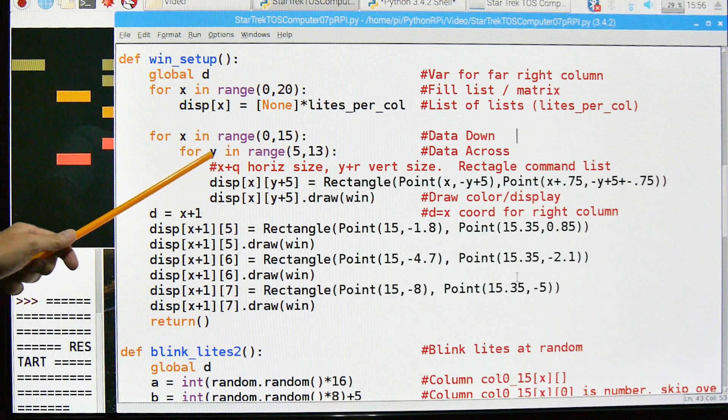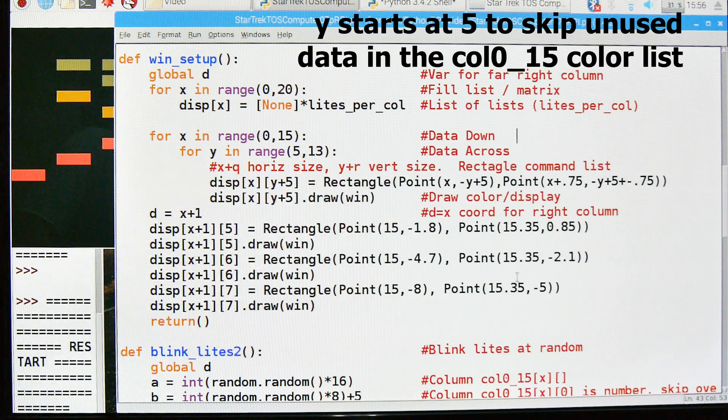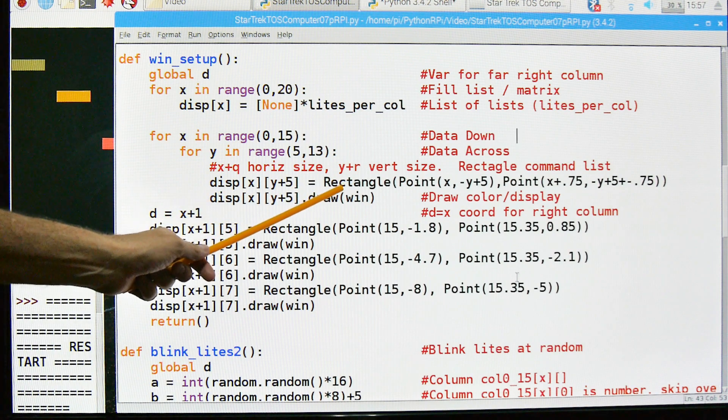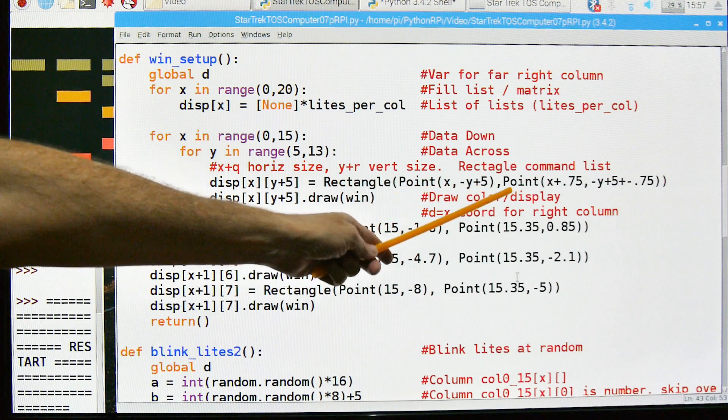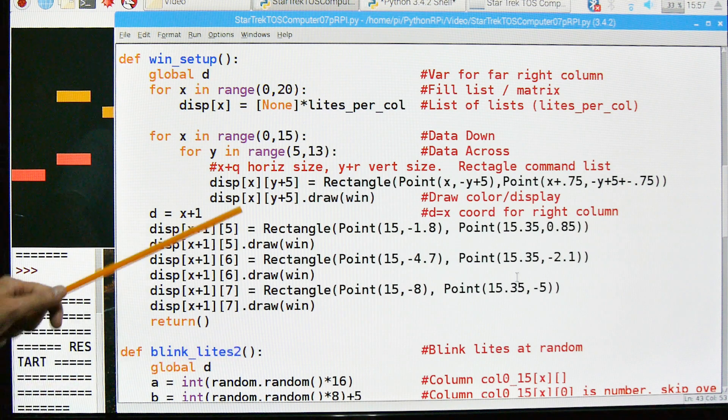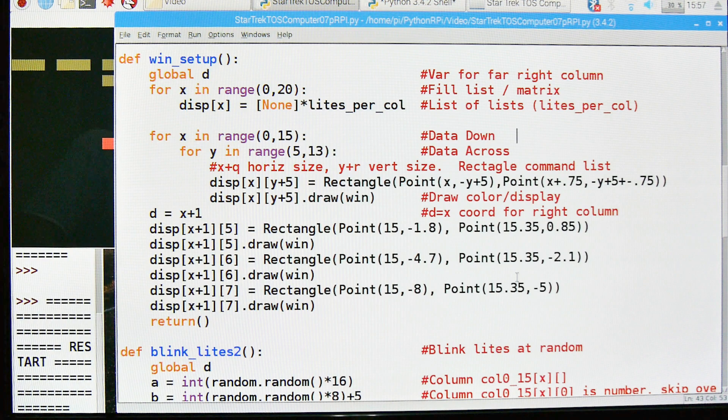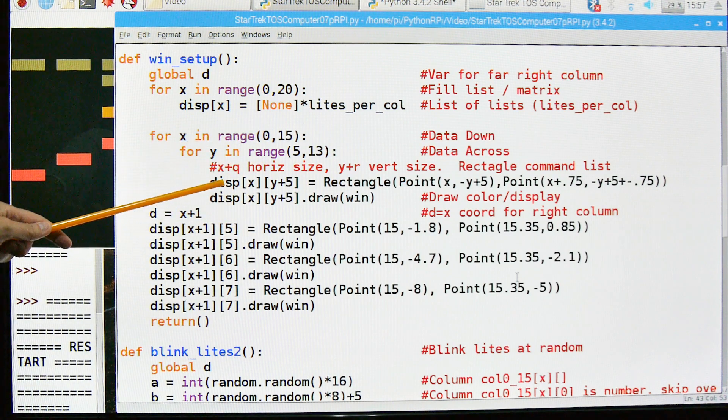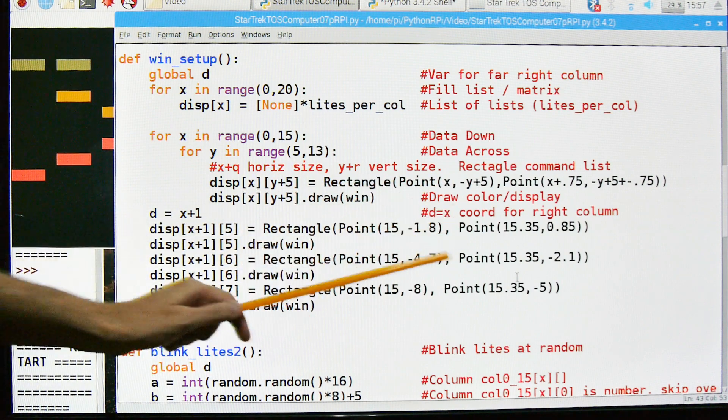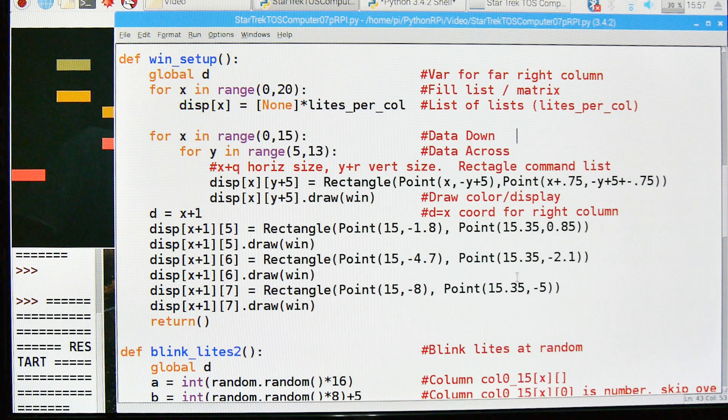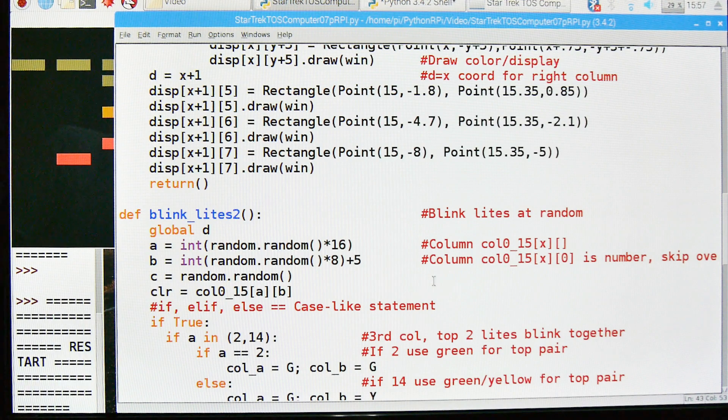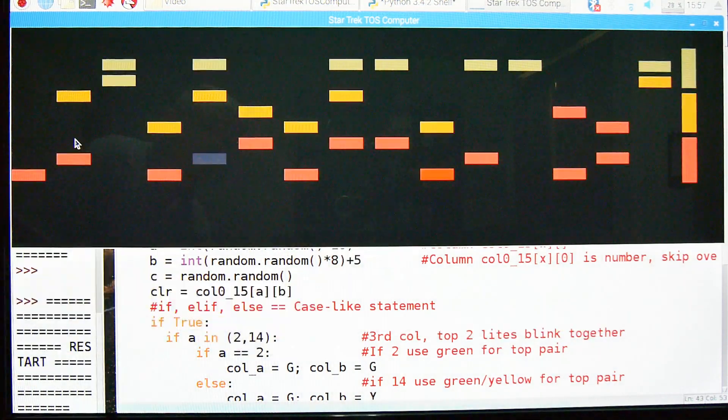For X in range of 0 to 15 and for Y in range of 5 to 13. So this is the data down and data across. We're going to create a list of these rectangle commands. So we have rectangle of point X and Y plus an offset and point of X plus an offset and minus Y plus an offset. And we're going to draw that into the window. And we're going to loop through this. So this is going to create a set of lists that have this rectangle command all filled out and ready to go for us.